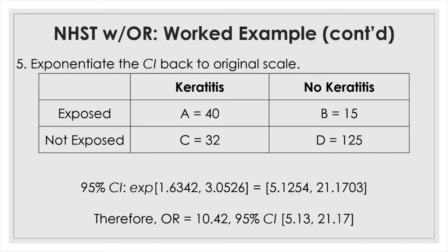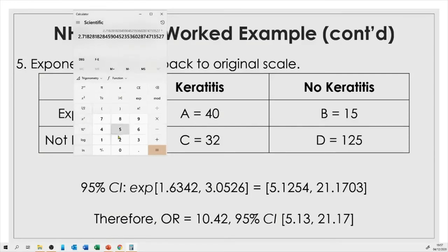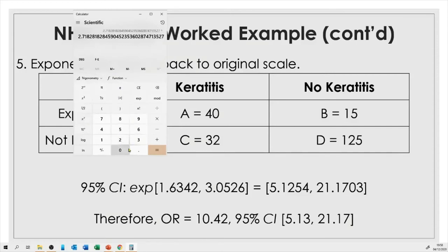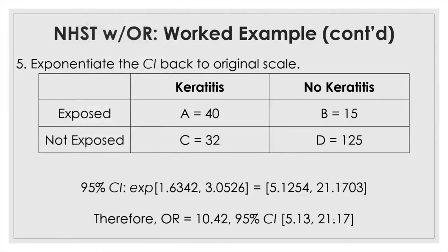So the actual odds ratio is 10.42 and the 95% confidence interval is 5.13 to 21.17. The odds ratio should be placed somewhere in the middle of this 95% confidence interval. Checking the numbers confirms they are correct.